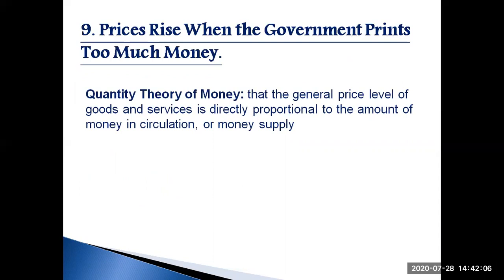The quantity theory of money was originally formulated by Polish mathematician Nicolas Copernicus in 1517, and was influentially restated by philosophers John Locke, David Hume, and Jean Bodin, and by economists Milton Friedman and Anna Schwartz in 'A Monetary History of the United States,' published in 1963.